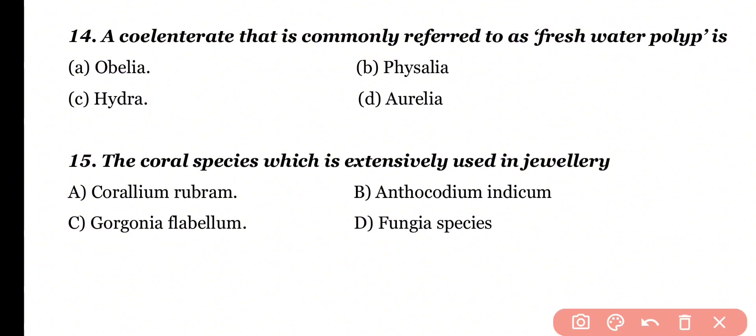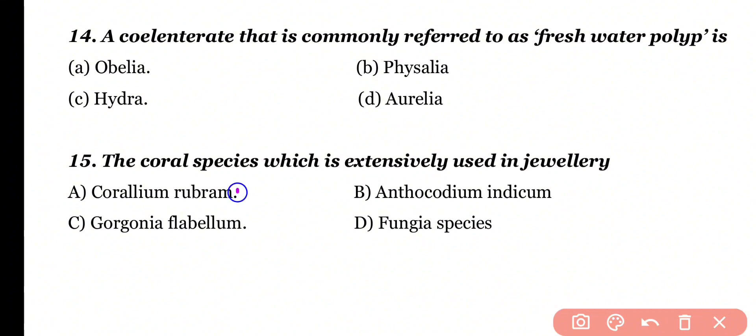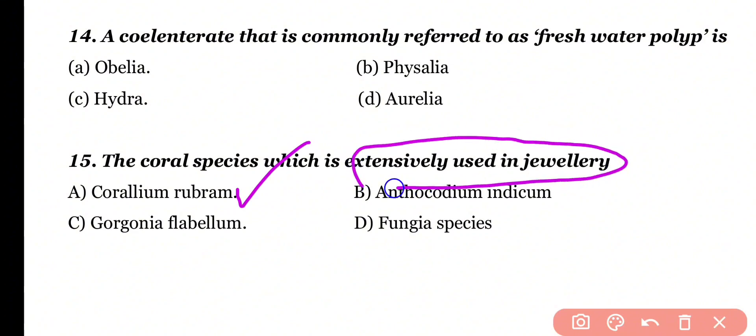Question number 15: The coral species which is extensively used in jewelry: Corallium rubrum, Anthocodium indica, Gorgonia fabulum, or Fungia species. Correct answer is option A. Corallium rubrum is a species of coral that is extensively used in jewelry.